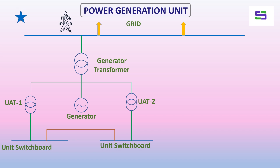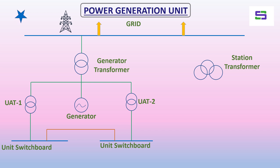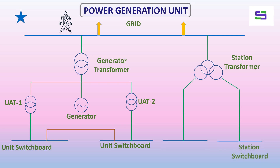To feed the common auxiliary loads or provide startup power for the power plant, we need a station transformer. The station transformer draws power from the grid through the switchyard and caters the power supply to the station switchboards connected with it. It may be a two-winding transformer or a three-winding transformer depending on the requirement.